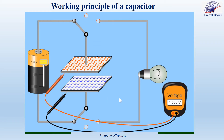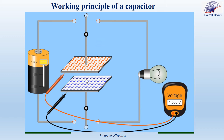Observe what will happen when we disconnect the battery using this switch. We observe that the potential difference between the two plates remains 1.5 volts, and the charge on each plate doesn't change, because we have an insulating material between the two plates, so electrons cannot transfer through this insulating material.